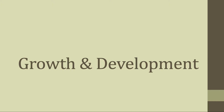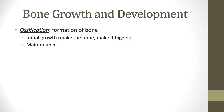First, we'll talk about bone growth and development. Ossification is the name for formation of bone. There are two categories or times of ossification, which are initial growth and then maintenance. Our body first needs to make a bone, and then we need to make that bone bigger as the organism grows. We also need to maintain our bone to maintain homeostasis as well as refresh the bone throughout our entire adulthood.